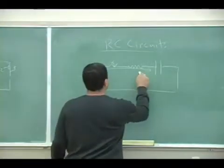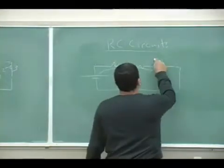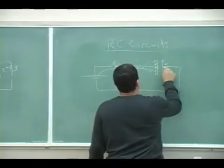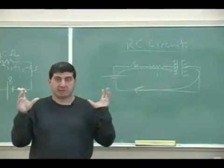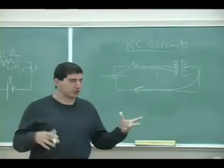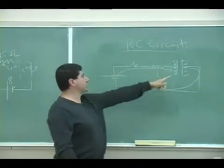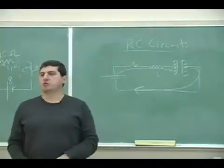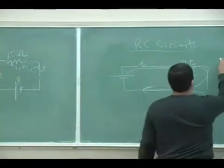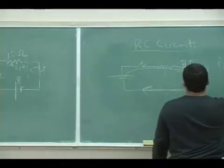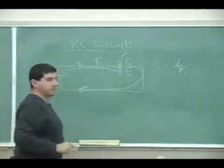The current begins to flow, and as the current begins to flow, it builds up charge on the capacitor. So here's what we expect to happen just from logically thinking about the situation. When you're charging an RC circuit, we expect initially, when you first close it, the capacitor is uncharged — so we initially expect the current to be high. The initial current we expect to be V over R.